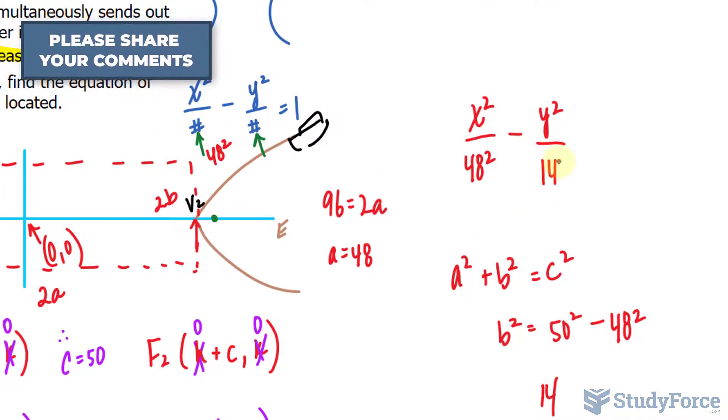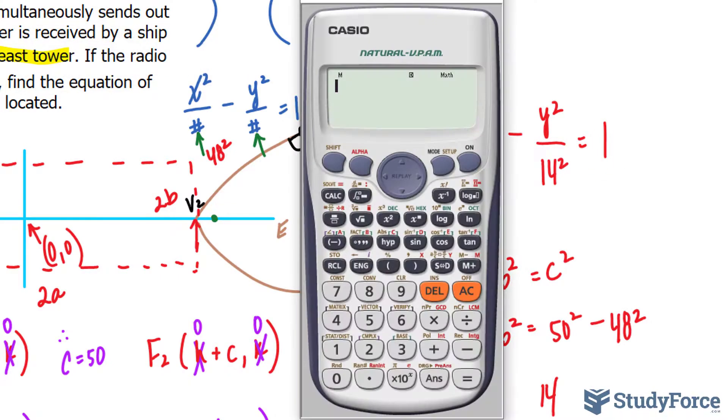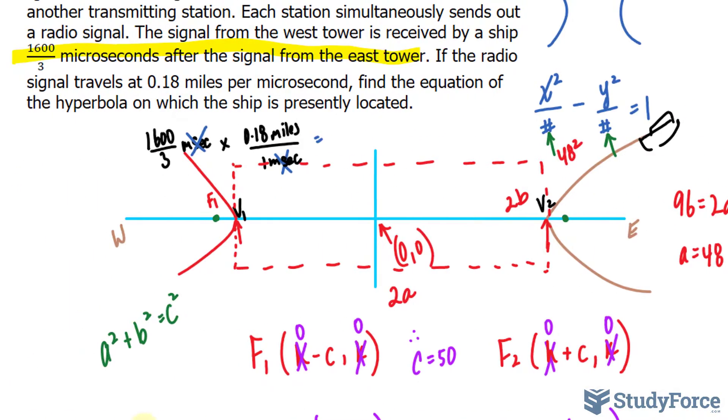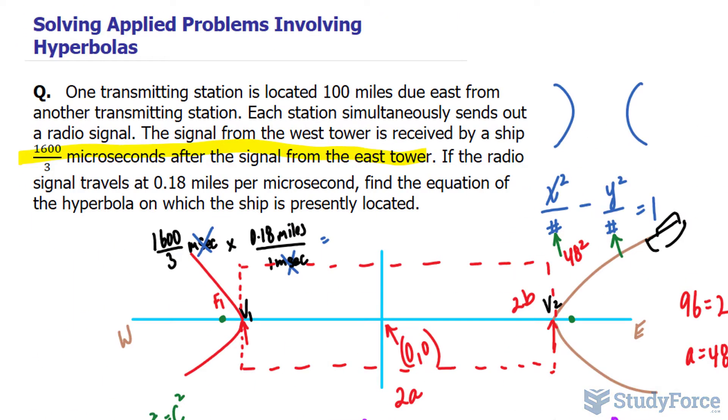So I have 14 squared is equal to 1. Let's quickly find out what 48 raised to the power of 2 is. It is 2,304, 2,304, and this one is 196. And there you have it. That is how to solve application problems involving hyperbolas.